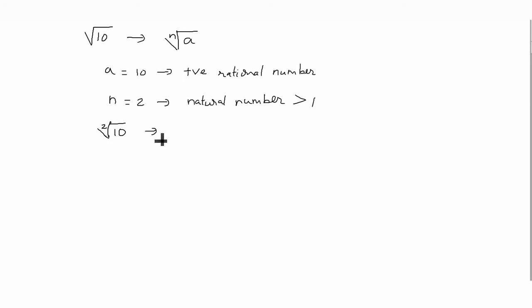So square root of 10 as a whole has an irrational value, as it cannot be solved for a rational value. Therefore, square root of 10 is a surd. If all three conditions are satisfied, then we can say the number is a surd. What about square root of 36?